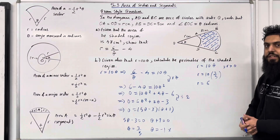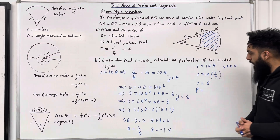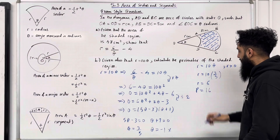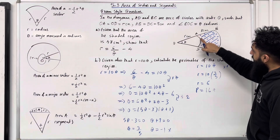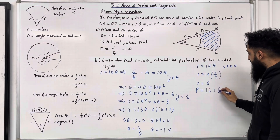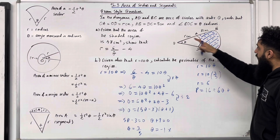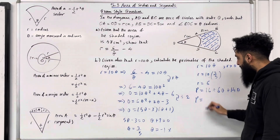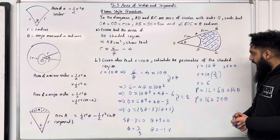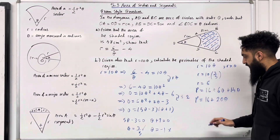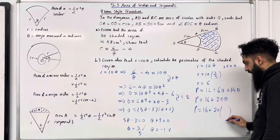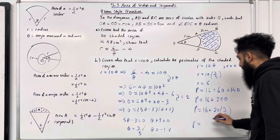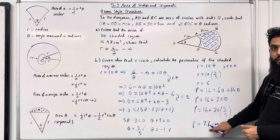Now we calculate the perimeter P of the shaded region by adding up all the outside edges. We have two straight edges of 8 centimetres each, giving 16. The inner arc length is R times theta equals 6 theta. The outer arc length is (R plus 8) times theta equals 14 theta. So the perimeter is 16 plus 6 theta plus 14 theta, which equals 16 plus 20 theta. Substituting theta equals 3 over 5 gives P equals 16 plus 20 times 3 over 5, which equals 28 centimetres.